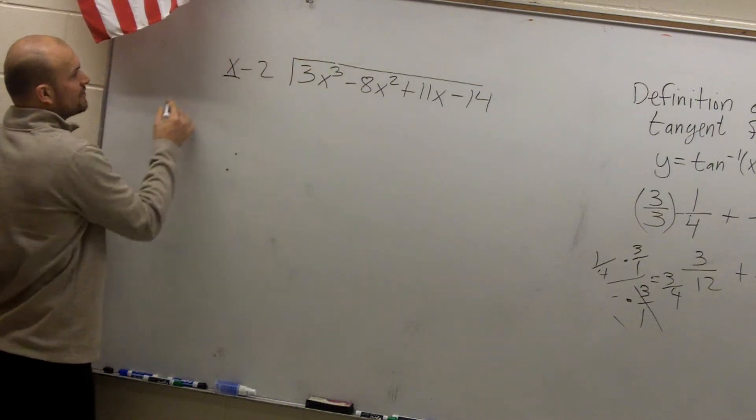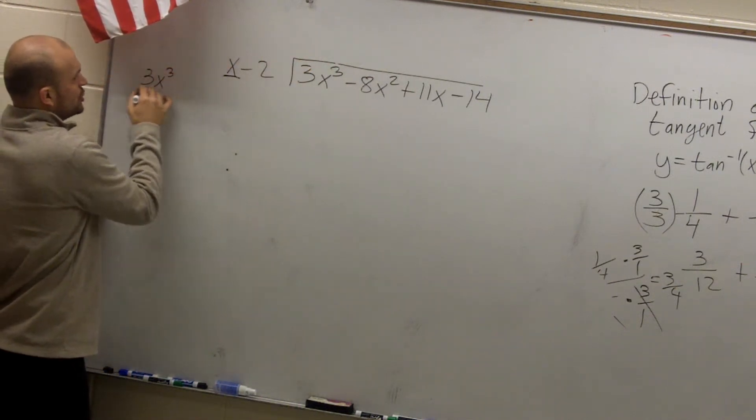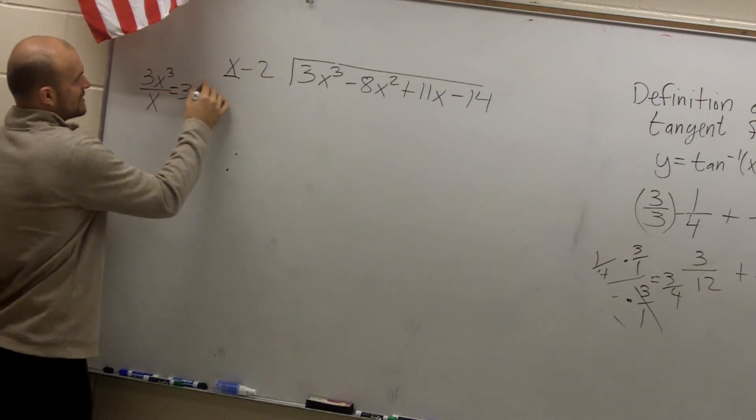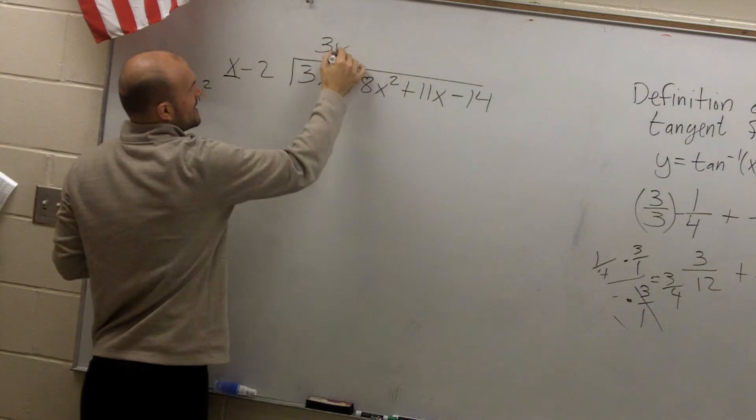All you're doing is, remember you're dividing your first term. 3x cubed divided by x. That equals 3x squared. So that's going to be your first answer.